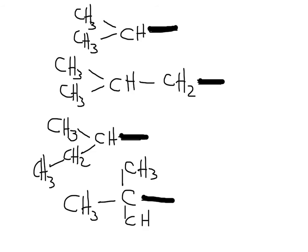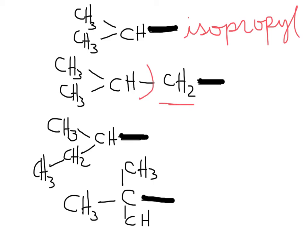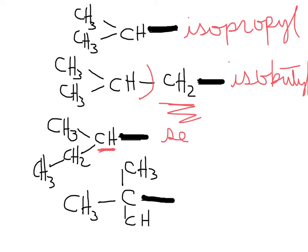I'm going to show you the method I used as a student to remember all of these alkyl substituents. The first one is isopropyl — it's the isomer of propyl, which is the easiest one. If you compare isopropyl with isobutyl, you just need to add one CH2 extra, so that will be isobutyl. Then when you see the last two, it's simple: this one is from a secondary carbon, so it's sec-butyl, and this one is from a tertiary carbon, so that is tert-butyl.